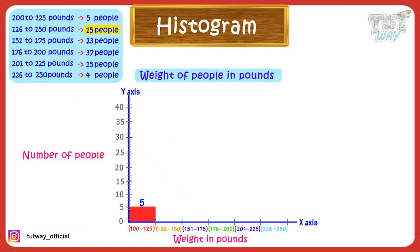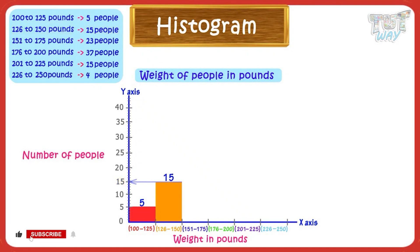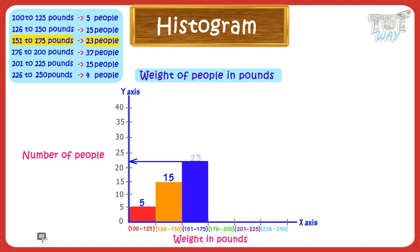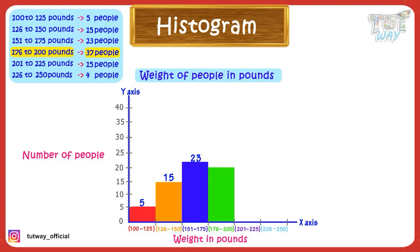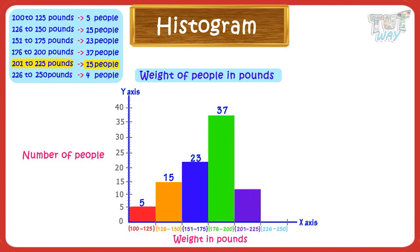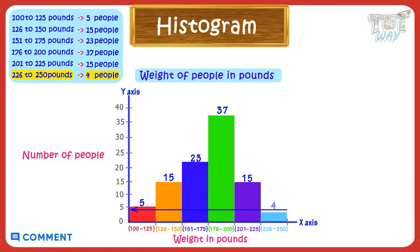Next we have 15 people in the range of 126 to 150 pounds, so make a bar up to the mark of 15. Next we have 23 people in the range of 151 to 175 pounds, so make a bar up to 23. Next we have 37 people in the range of 176 to 200 pounds, so make a bar up to 37. Next we have 15 people in the range of 201 to 225 pounds, so make a bar up to 15. Next we have 4 people in the range of 226 to 250 pounds, so make a bar up to 4.